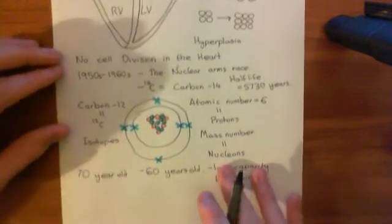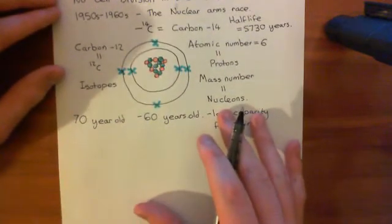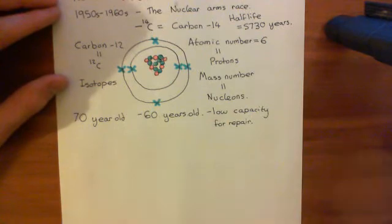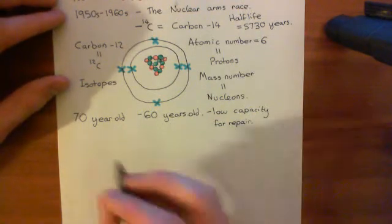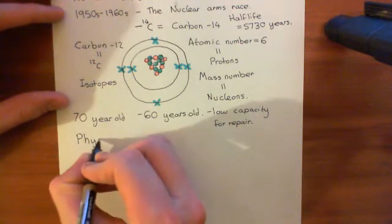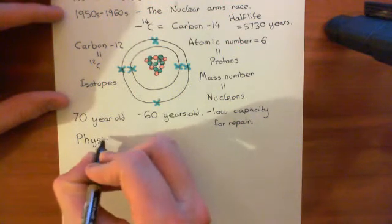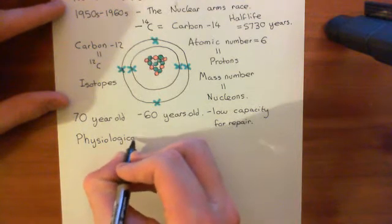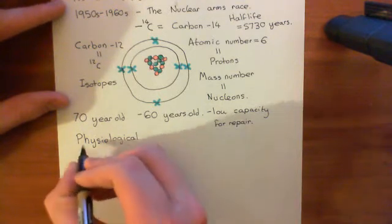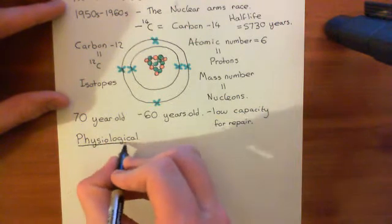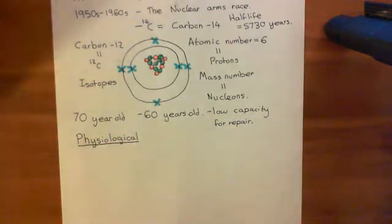Let's now talk about different examples of cardiac hypertrophy, starting with physiological hypertrophy. There are two major examples of when physiological hypertrophy can happen, and these are examples of hypertrophy where it's actually supposed to happen.